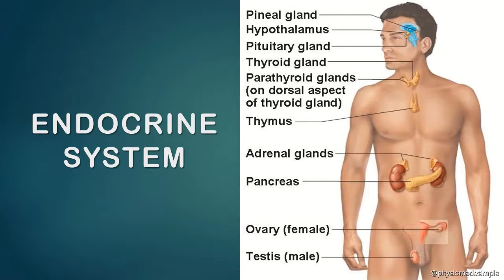Melatonin helps regulate our response to light and darkness. When darkness comes, the secretion of melatonin increases. The signal travels from our eyes to our brain, reaching the sleeping center, which triggers sleep.